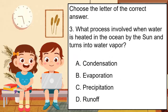What process is involved when water is heated in the ocean by the sun and turns into water vapor? A. Condensation. B. Evaporation. C. Precipitation. D. Runoff. The correct answer is B.